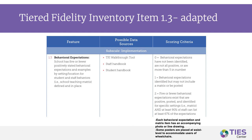Here is an example of simple additions you could make to the scoring criteria for item 1.3 of the TFI. Underneath the list of scoring criteria previously described, there are now two additional items: 1, each behavioral expectation and matrix item has an accompanying photo or line drawing; and 2, some posters are placed at waist level to accommodate users of wheelchairs.